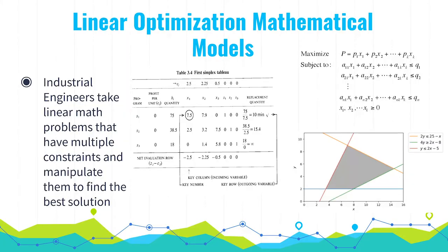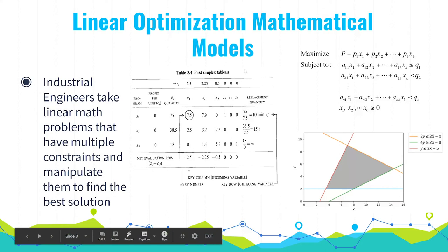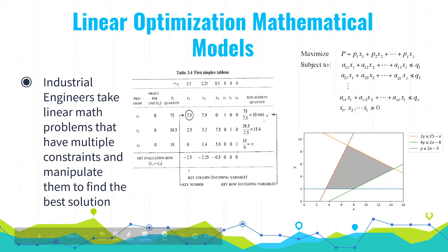Optimization is mainly composed of using mathematical models to solve problems. Industrial engineers take linear math problems that have multiple constraints and formulate a possible solution. In this first picture, you can see that using the simplex tableau, they could find a 10-minute time to complete a task. Here is a linear equation, and these would be the constraints you would plug in with real numbers for a real problem.